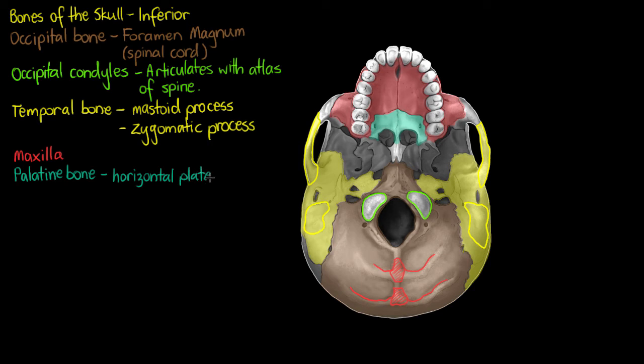We have two structures that make up our hard palate: the horizontal plate of the palatine bone which is that entire portion we can see there in green, and the palatine process.